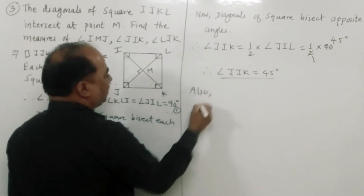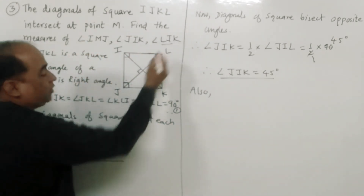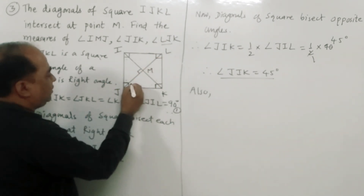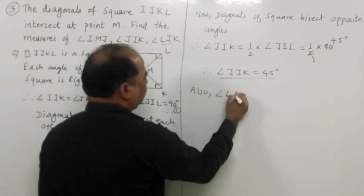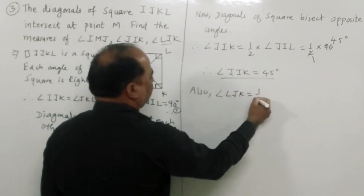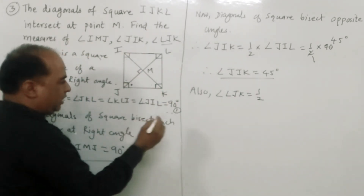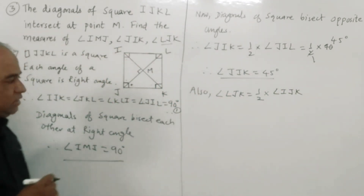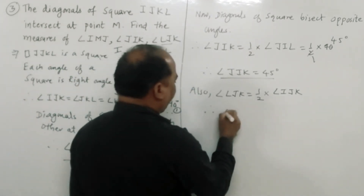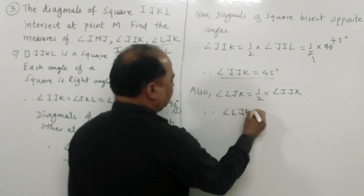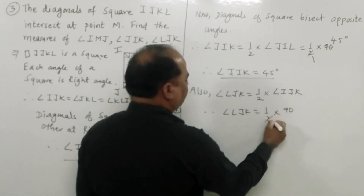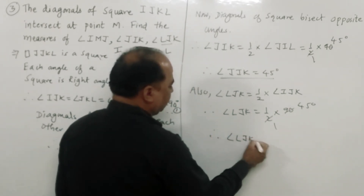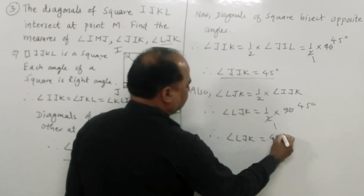Similarly, the third angle we have to find is angle LJK. A diagonal bisects opposite angles, therefore angle LJK is equal to 1/2 of angle IJK, which is 1/2 into 90, equal to 45 degrees.